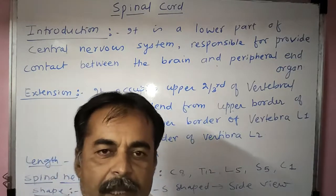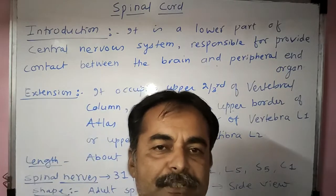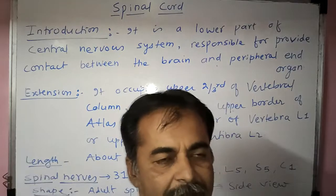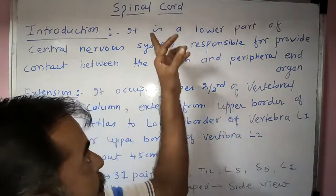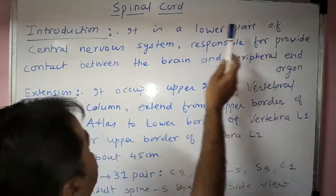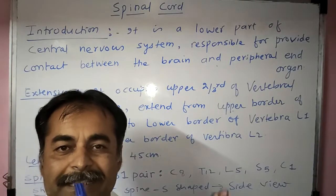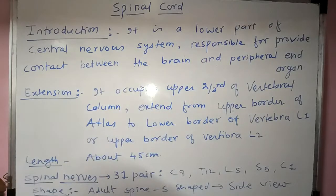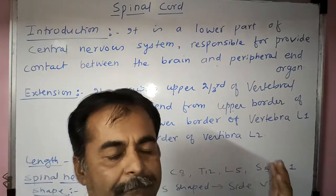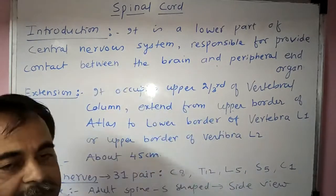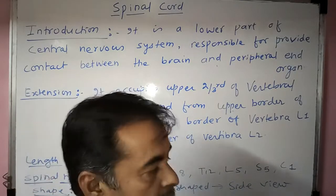Hello friends, today's topic of discussion is the spinal cord. In the previous video we had seen the central nervous system, which is basically divided into two parts: the brain and spinal cord. The spinal cord is the lower part of the central nervous system, and it is responsible for providing contact between the brain and the peripheral end organ.